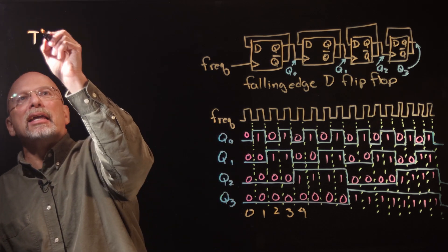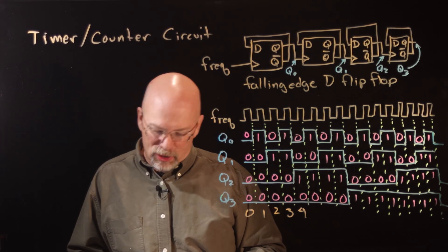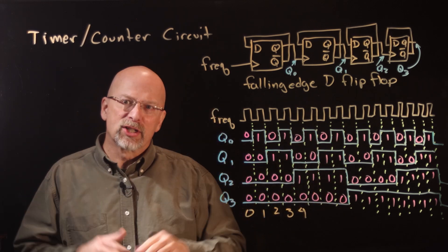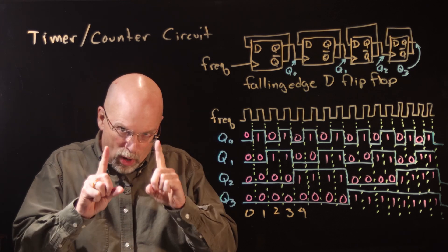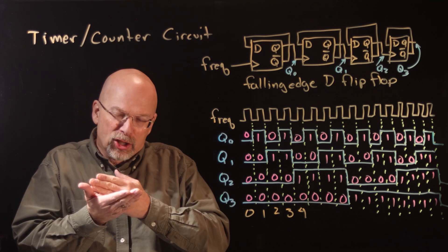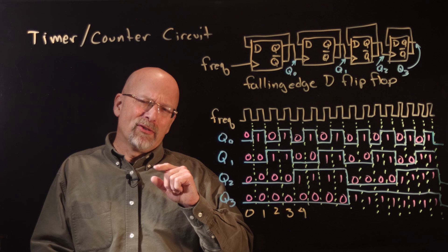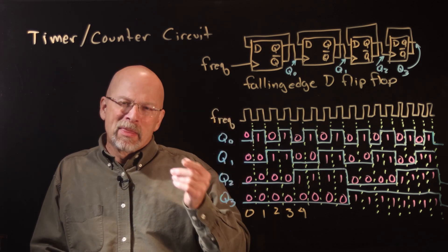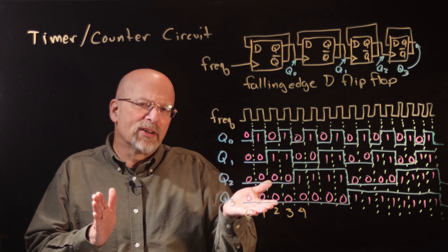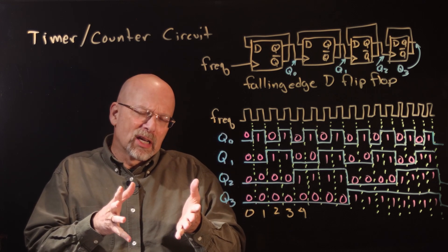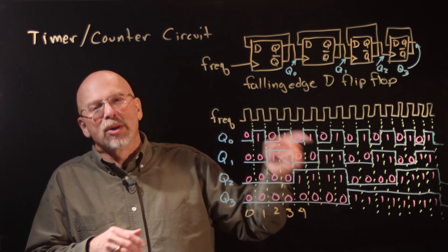What we're doing is we're counting, and this is a timer, or sometimes referred to as a counter circuit. A very important application is a multitasking operating system. A multitasking OS on a single core has to have the ability to switch from one application to another application to another. The way it does that is it gives each application a time slice — let's just say three milliseconds — runs that application for three milliseconds, then stops it and gives control over to a different application for three milliseconds, and eventually comes back around to the first one.